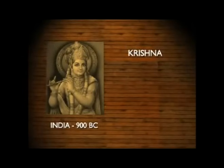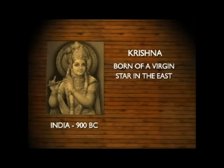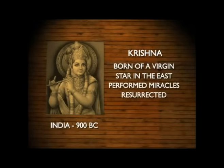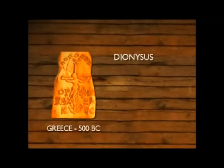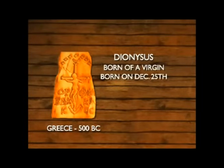Krishna of India, born of the Virgin Devaki, with a star in the east signaling his coming, performed miracles with his disciples and, upon his death, was resurrected. Dionysus of Greece, born of a virgin on December 25th, was a traveling teacher who performed miracles such as turning water into wine.